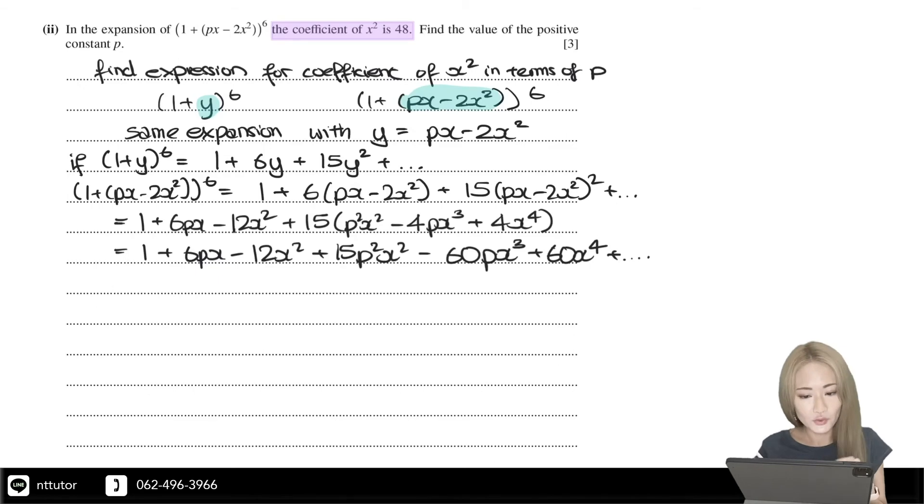We know the coefficient of x² is 48. So we're only going to concern ourselves with the coefficient of x², which are these two terms that give x².